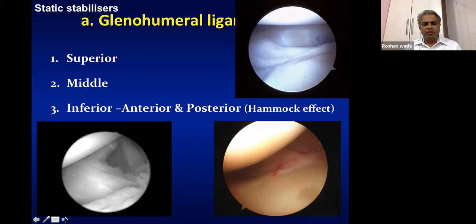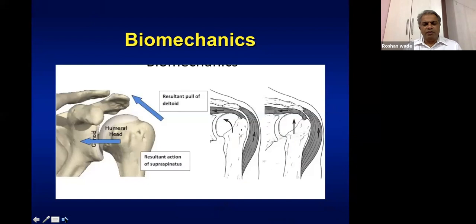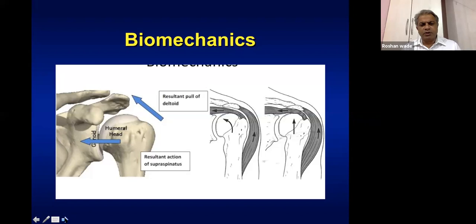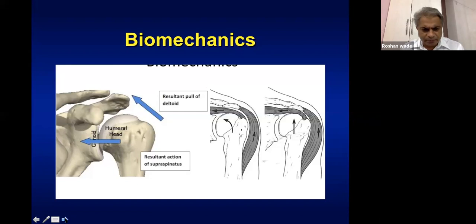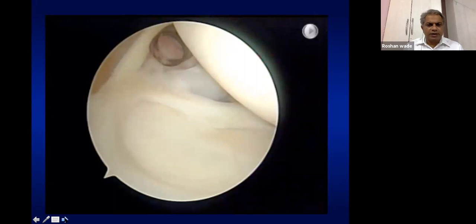To understand shoulder biomechanics, one must understand the force couple formed by anterior and posterior muscle structures — anteriorly the subscapularis, posteriorly the infraspinatus and teres minor. This force couple balances the glenohumeral joint in the sagittal plane. In the axial plane, balance is provided by glenoid pressure from the humeral head and rotator cuff. Even a massive rotator cuff tear can cause an unstable shoulder, so intact rotator cuff and normal glenoid are required for normal glenohumeral compression.